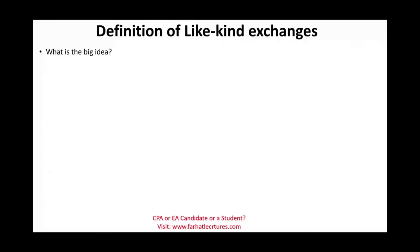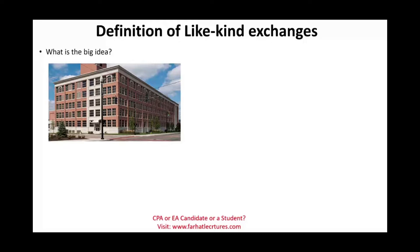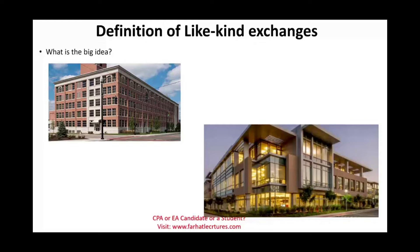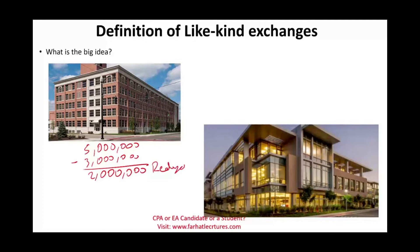So what's the big idea? Think about a company that owns a building and they want to update this building — they want to sell and upgrade to a new building. One option is they can sell this building, let's assume, for five million. That's the amount realized, minus the adjusted basis. And the adjusted basis for this building, let's assume, is three million. They would realize a gain of two million. This is the realized gain.